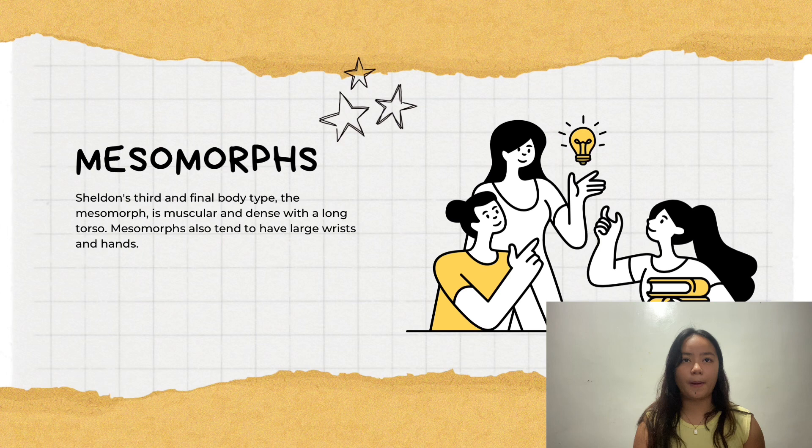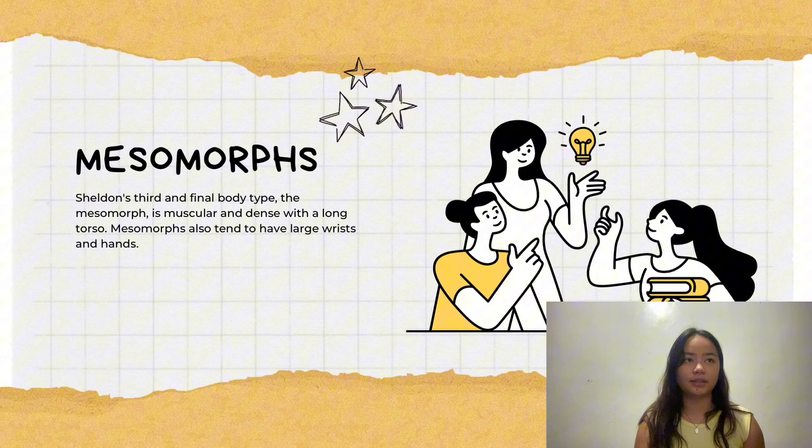Last is the mesomorph. Sheldon's third and final body type is the mesomorph. It is muscular and dense, with a long torso. Mesomorphs also tend to have large wrists and hands.